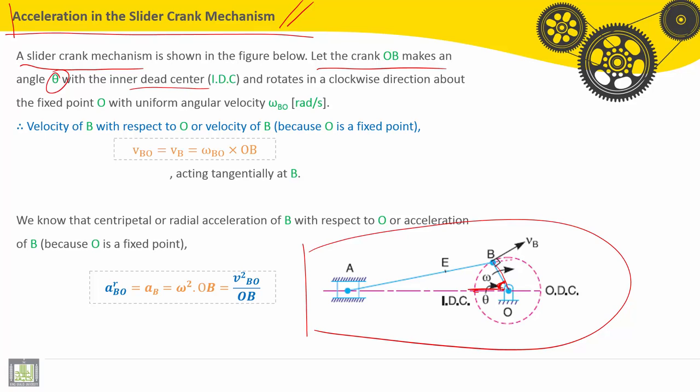The crank OB makes angle theta and rotates in a clockwise direction about the fixed point O with uniform angular velocity omega PO in radians per second.